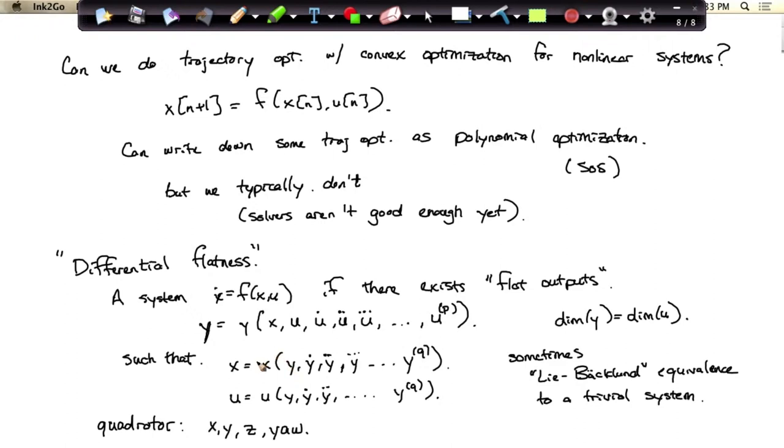Even though the state is a higher dimensional space. And these mappings, x and u here, from the output y and its derivatives, those can be big, complicated, nonlinear mappings, and they are for the quadrotor. But through those mappings, if I plan a trajectory in y, then I can back out what the trajectory had to have been in the other ones. And the trajectories in y can be potentially relatively unconstrained.